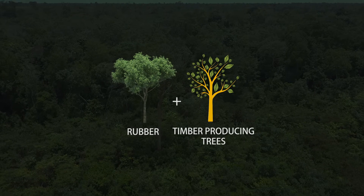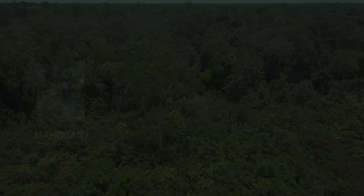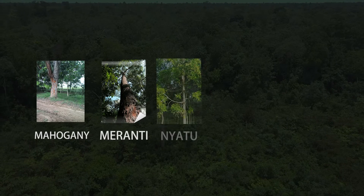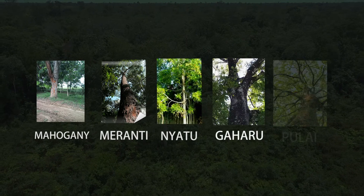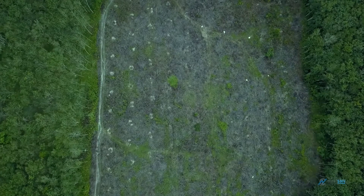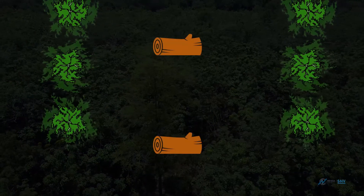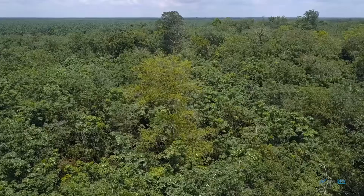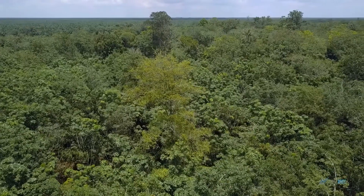Examples of timber-producing trees are mahogany, meranti, nyatu, gaharu, and pulai. They can be planted together with rubber with a distance of 12 metres between them. Timber-producing trees provide long-term income.